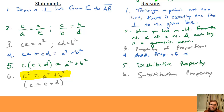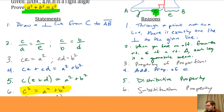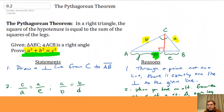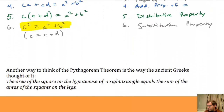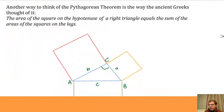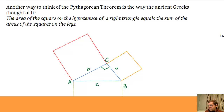That's just one of over a hundred different ways we could prove the Pythagorean Theorem. We're going to prove it in a different, more hands-on way in class, thinking about it the way the ancient Greeks did: the area of the square on the hypotenuse of a right triangle equals the sum of the areas of the squares on the legs.